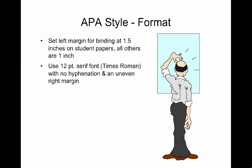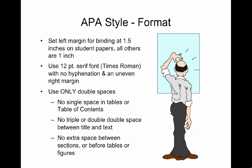Use only double spaces. In other words, no single space in tables or tables of contents, no triple or double-double space between title and text, and no extra space between sections or before tables or figures. Remember, though, to check the guidelines if you're writing a dissertation or conference paper or journal article.